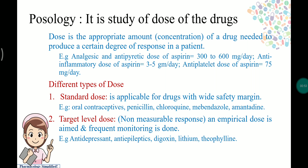For example, aspirin has several activities: antipyretic, analgesic, and antiplatelet. To show analgesic or antipyretic activity, the dose is 300 to 600 mg per day. For anti-inflammatory effect, it should be 3 to 5 grams per day, whereas the antiplatelet dose of aspirin is only 75 mg per day. There are different types of doses.